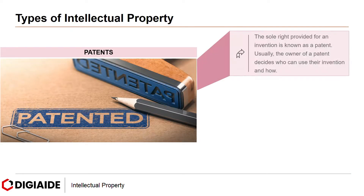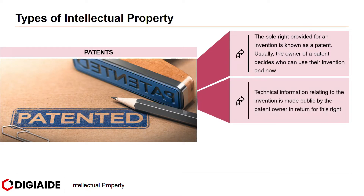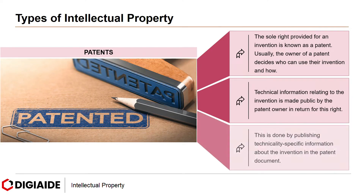Next, Patents. The sole right provided for an invention is known as a patent. Usually, the owner of a patent decides who can use the invention and how. Technical information relating to the invention is made public by the patent owner in return for this right. This is done by publishing technicality-specific information about the invention in the patent document.